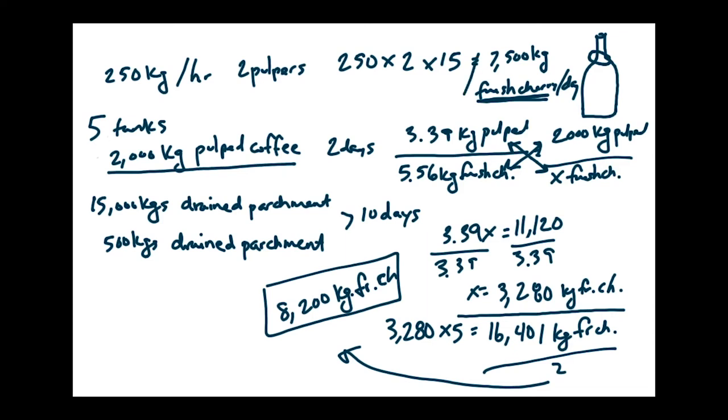So that's for our fermentation tank. We have our pulper up here. And now we're going to look at the drying. So the first thing we see is we have 15,000 kilograms of drained parchment. And it takes 10 days to dry. So let's just go ahead and divide that by 10 so we can know what we have per day. And that's going to be 1,500 kilograms of drained parchment.